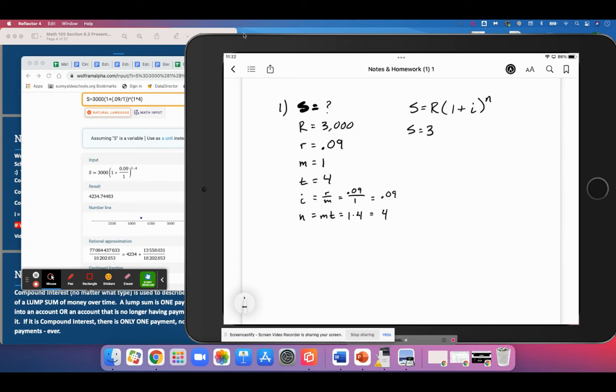That's actually what we're putting in Wolfram when we do this. So S is equal to 3000 times one plus, for i I used 0.09 over one, and for n I used one times four. Now again I could have just put in 0.09 and four because I have those values here. What we end up with is S is equal to 4,234 dollars and 74 cents.